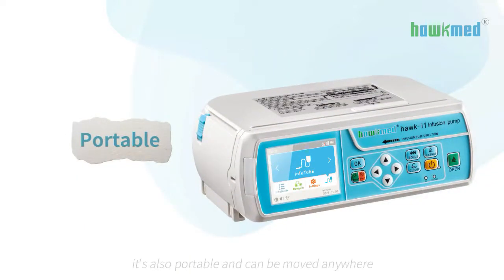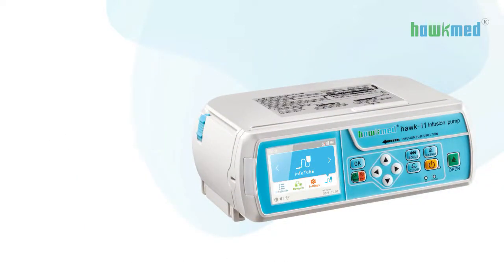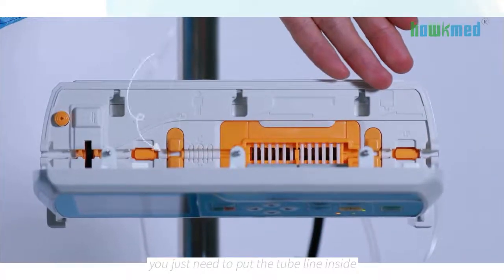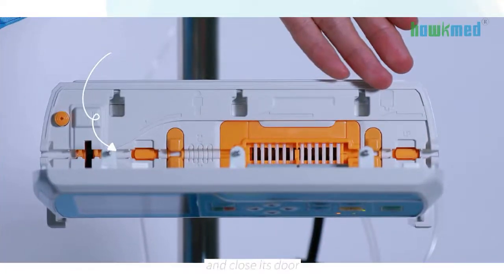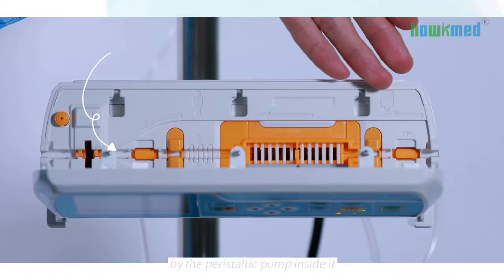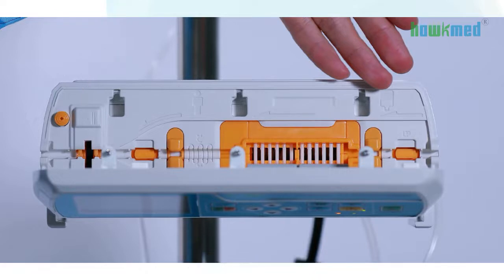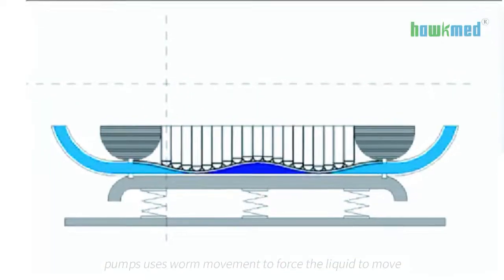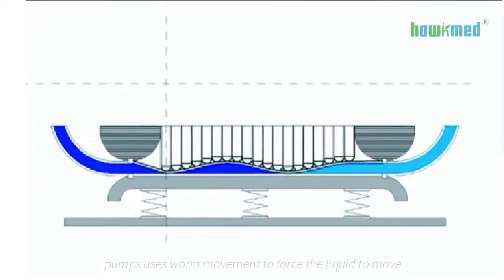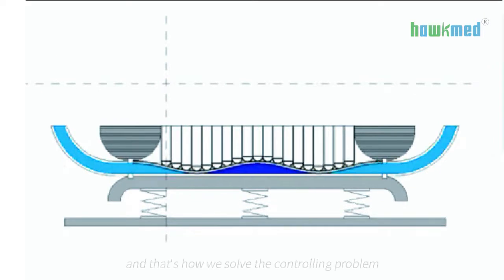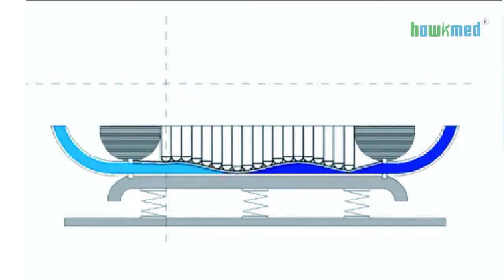It's also portable and can be moved anywhere as it's battery powered and it's easy to set up. You just need to put the tube line inside and close its door and it will start delivering medicine by the peristaltic pump or volumetric pumps inside it. These pumps use worm movement to force the liquid to move, and that's how we solve the controlling problem.